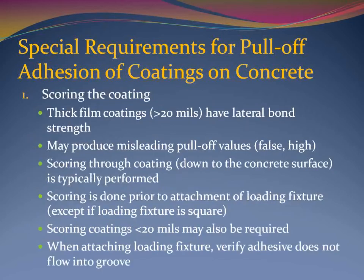First, we'll discuss scoring of the coating. Thick film coatings greater than 20 mils may have lateral bond strength, which can produce misleading pull-off values. Therefore, you will likely need to score the coating down to the concrete prior to attaching the loading fixture. Scoring a coating on concrete that is less than 20 mils in thickness may also be required. Scoring can be done by hand if the coating is thin enough. For very thick coatings, a mechanical method of scoring may be required. You will need to score the coating prior to attaching the fixture — otherwise you may inadvertently shear it off. When attaching the fixture to the surface, make sure that any excess glue does not flow into the score groove.